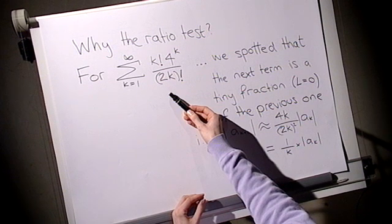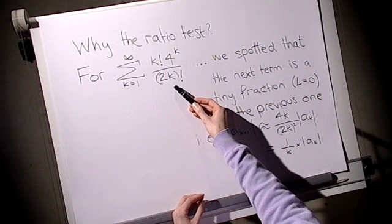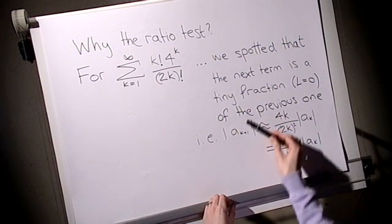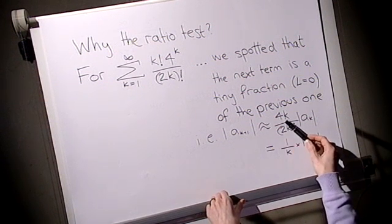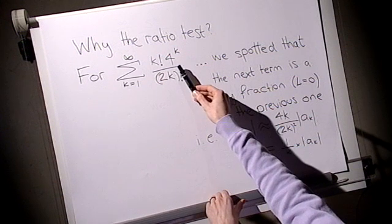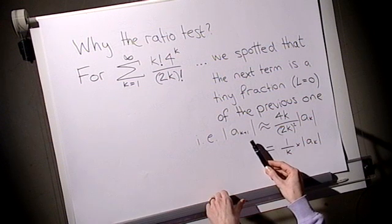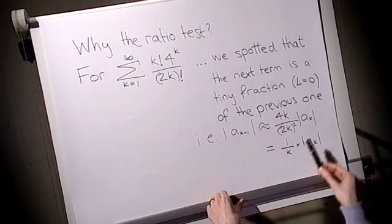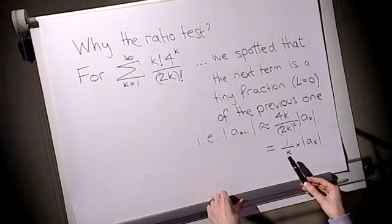So for our example here, one of the key things we may have spotted was that when we look at the ratio of one term to the next term, lots of the terms cancel. In particular, if I was to take a_{k+1}, to get to the next term or to get to a_{k+1} from a_k, we roughly multiply by k, multiply by 4, and divide by 2k twice. So a_{k+1} is roughly 4k over 2k squared lots of a_k, but that's about 1 over k which gets very small as k tends to infinity. In particular, that's why l equals 0 is the value.